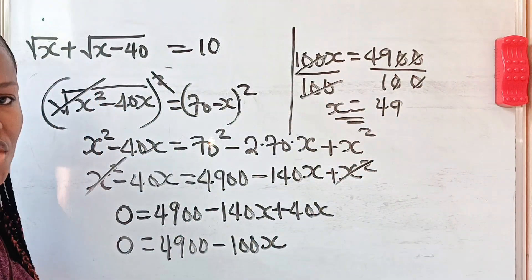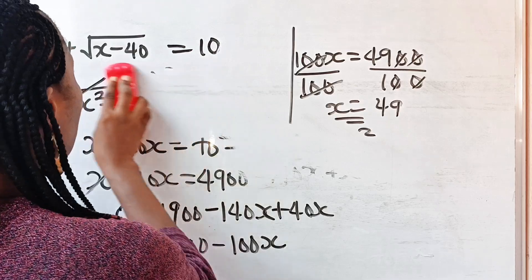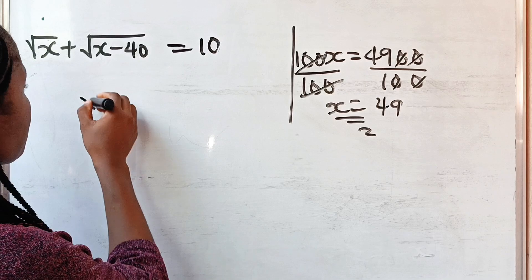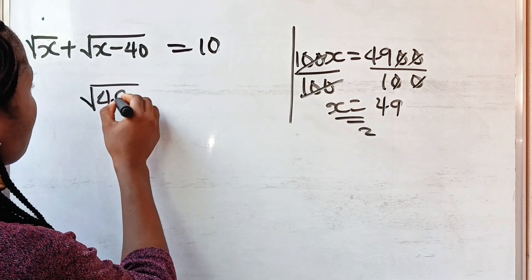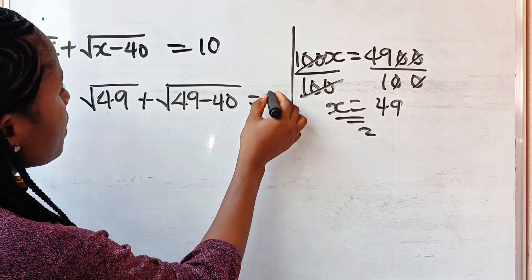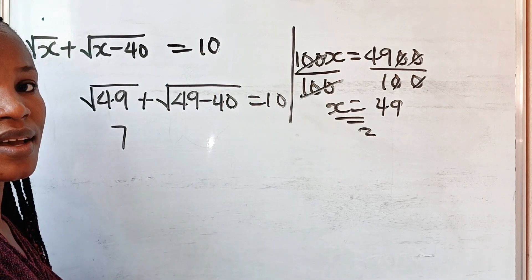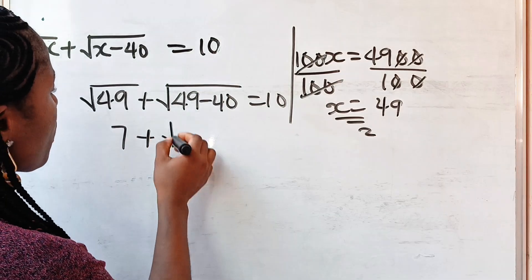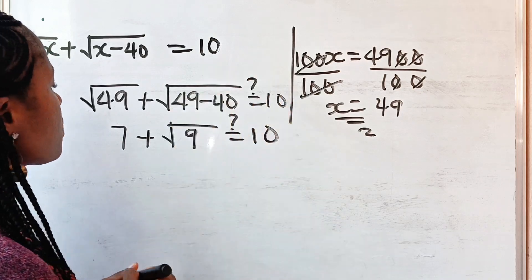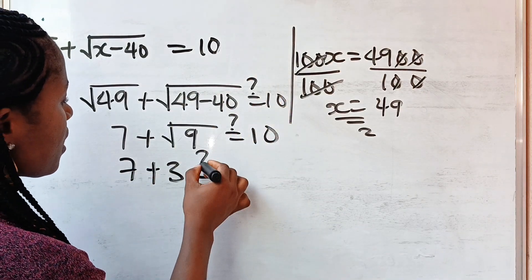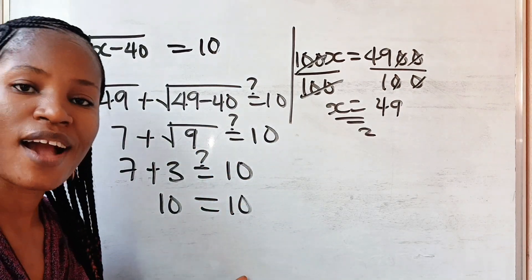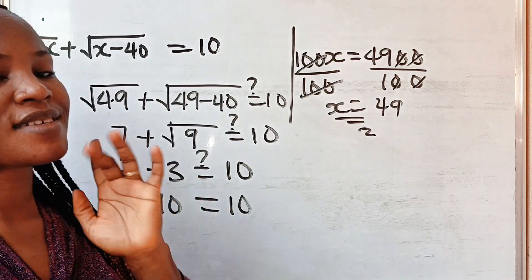Let's check if the answer is correct. If x equals 49, the equation says square root of 49 plus square root of 49 minus 40 is equal to 10. Square root of 49 is 7, and square root of 9 is 3. So we have 7 plus 3, which is indeed equal to 10. So we can confirm that x equals 49 is correct. Thank you so much for watching. See you in my next video.